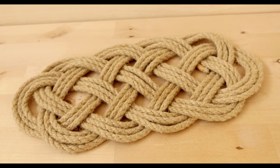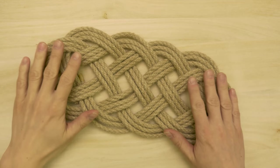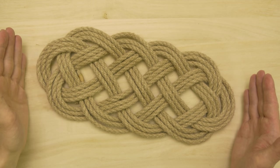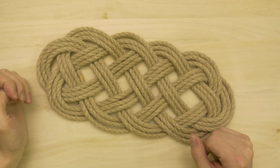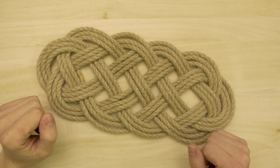In this video we're going to take a look at how to tie the Prolong mat. Here you can see a three-pass version of the Prolong mat. As you can see it is a rectangular mat which is perfect for hot dishes straight from the oven.